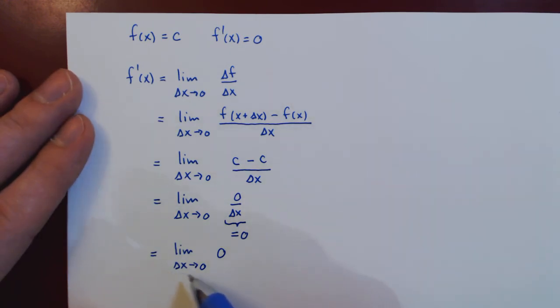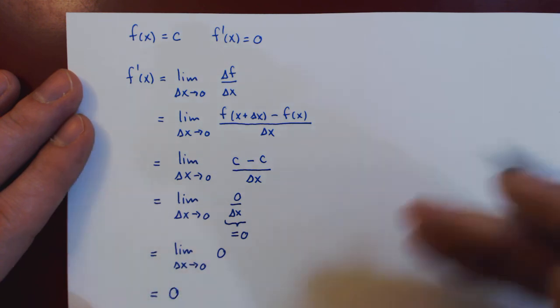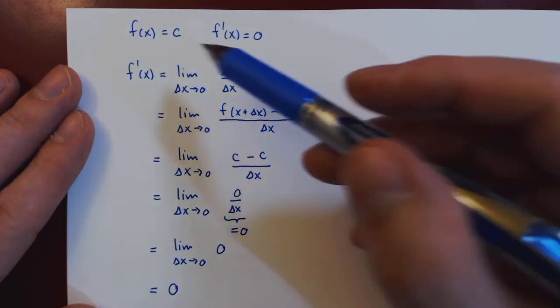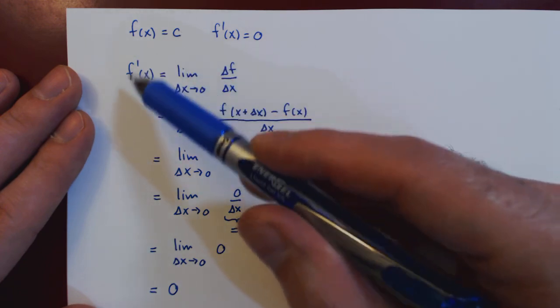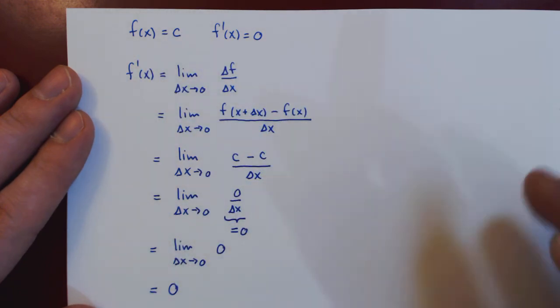And obviously as delta x shrinks to 0, as 0 is always 0, well then 0 is approaching 0. And this proves that if the function is constant, its derivative is indeed equal to 0.